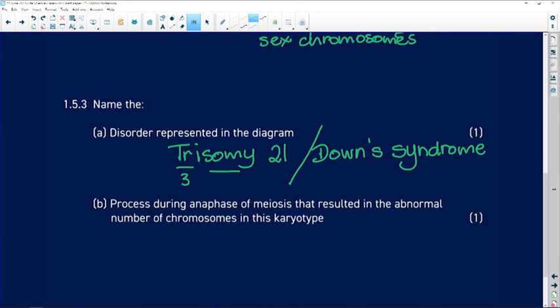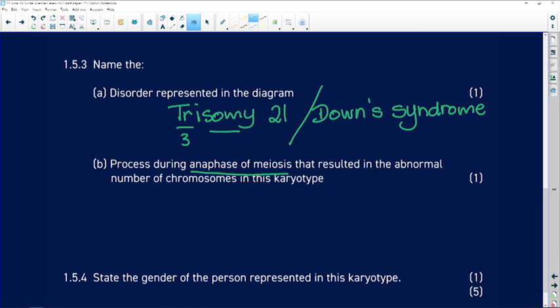Name the process during anaphase of meiosis that resulted in one of the cells getting three copies of chromosome 21. During anaphase of meiosis, one homologous chromosome of a pair moves to one pole and the other moves to the opposite pole. But what if both copies move to the same pole?